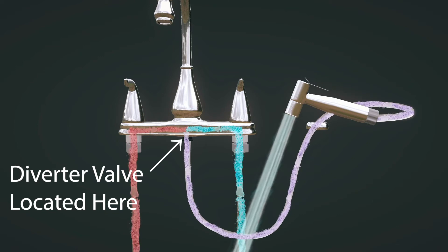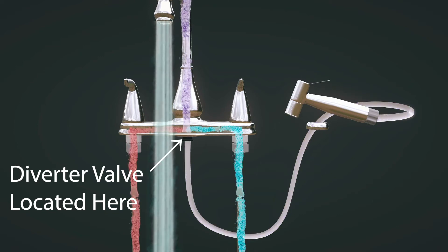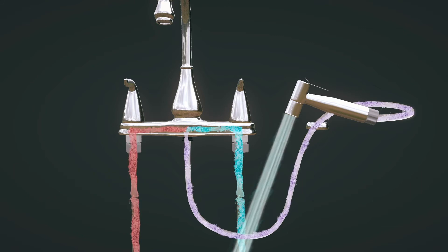When the sprayer button is released, the water pressure is diverted back to the faucet, preventing the sprayer from ever being pressurized.